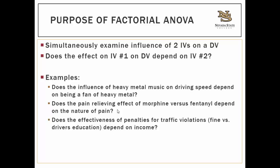Here are some examples of research questions you could test with a factorial ANOVA. The first one: does the influence of heavy metal music on driving speed depend on being a fan of heavy metal? Pause for a minute and think about what the independent and dependent variables are in this example.